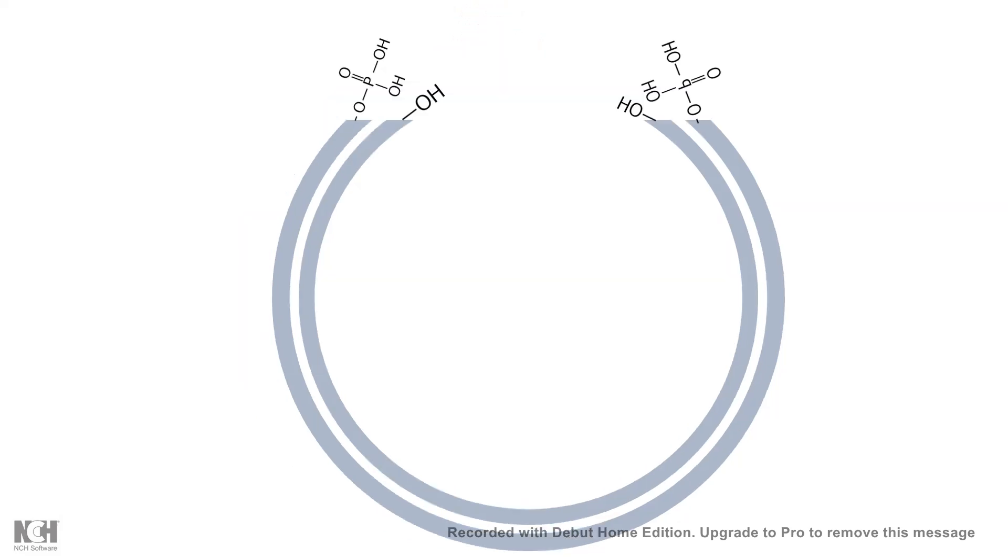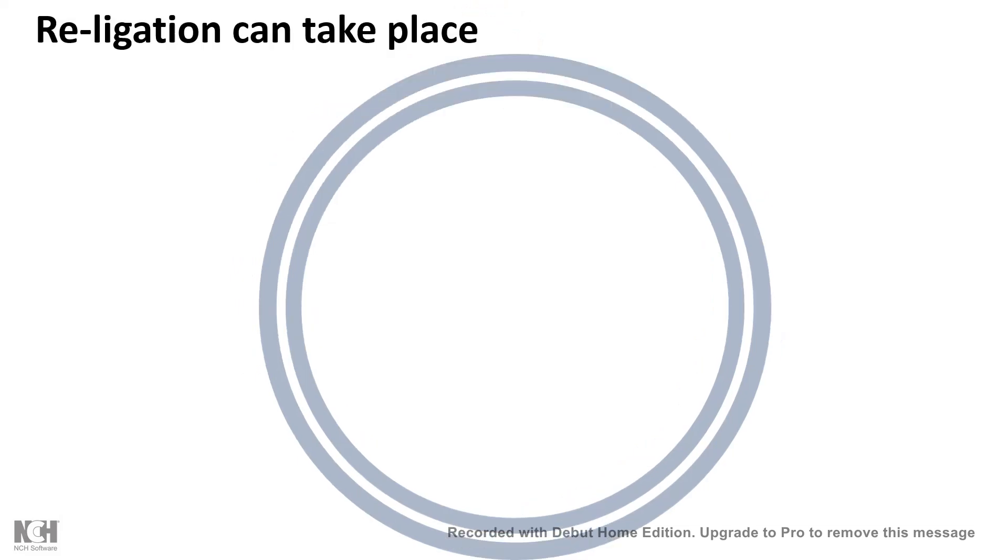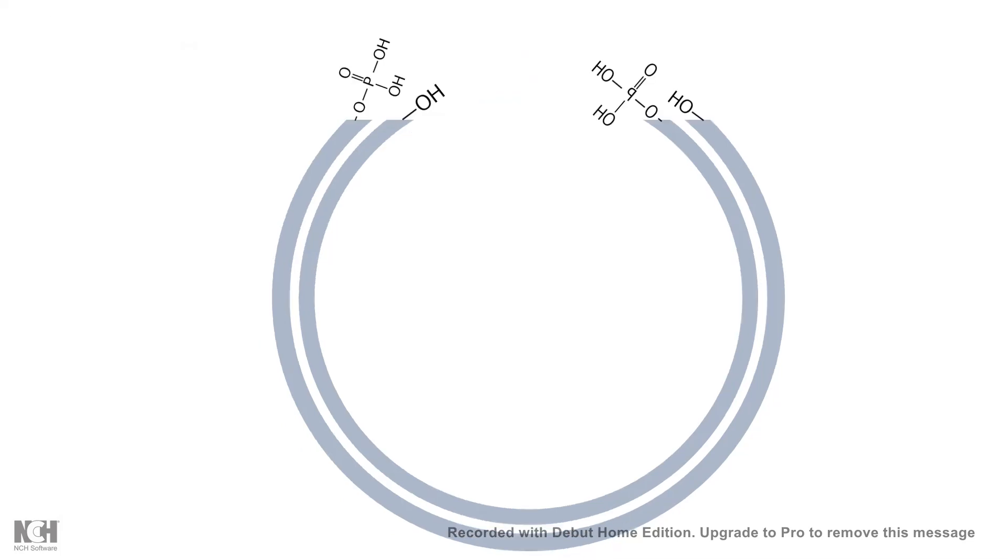Now, what happens is when you cut the plasmid with restriction enzyme, there are ends with phosphate and hydroxyl, but this can re-ligate to each other if they are not dephosphorylated. In order to prevent the re-ligation or self-ligation, these ends can be dephosphorylated using the enzyme alkaline phosphatase.